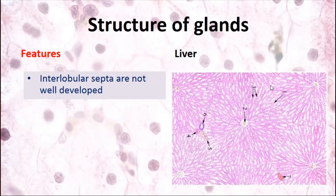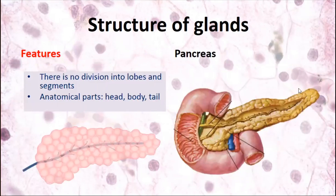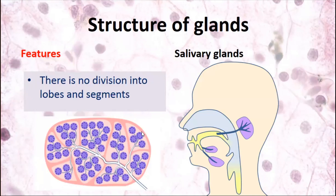Let's look at specific differences in the organization of these glands. In human liver, the interlobular septa are not well developed, so we cannot clearly see borders between lobules. In the pancreas, it is divided directly into lobules from its anatomical parts — head, body, and tail. In salivary glands, there are only lobules — no lobes or segments.